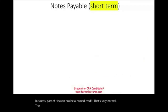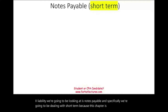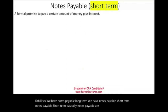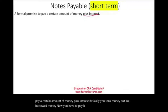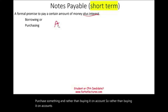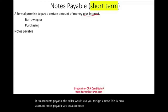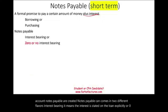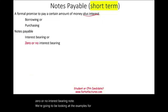The second liability we're going to look at is notes payable — specifically short-term notes since this chapter is about current liabilities. Notes payable are loans, a formal promise to pay a certain amount of money plus interest. You borrowed money and have to pay it back with interest within one year. Notes payable comes in two flavors: interest-bearing, where the interest is explicitly stated on the loan, or zero-interest-bearing, where no rate is stated on the face of the note.